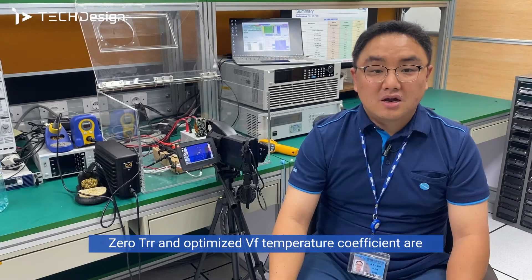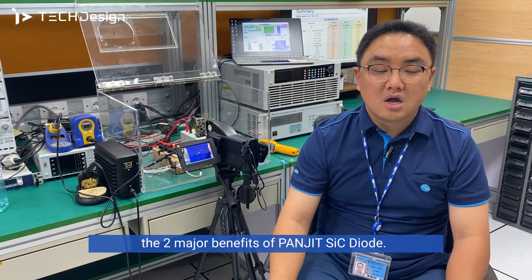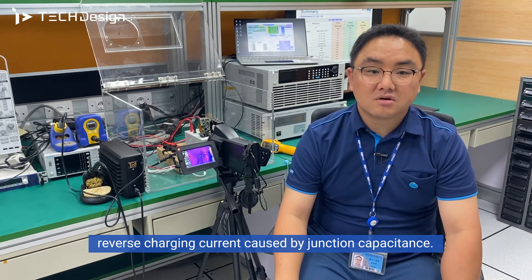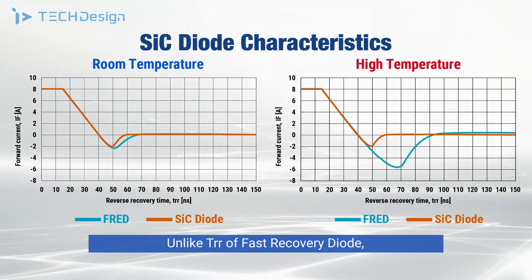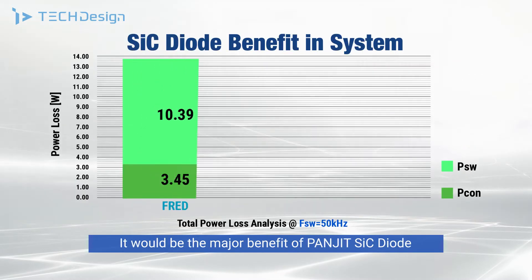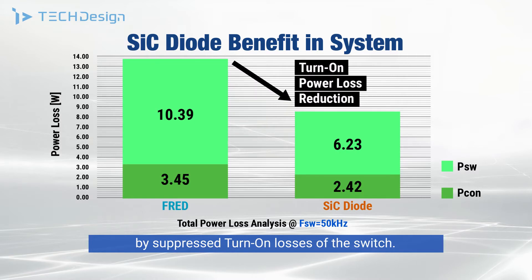Zero TRR and optimized VF temperature coefficient are the two major benefits of Panjit SiC Diode. SiC Diode has zero TRR while having a real reverse charging current caused by junction capacitance. Unlike the TRR of fast recovery diode, the reverse charging current of SiC Diode remains at a similar level at high temperature operation. This is a major benefit for increasing system efficiency by suppressed turn-on losses of the switch.